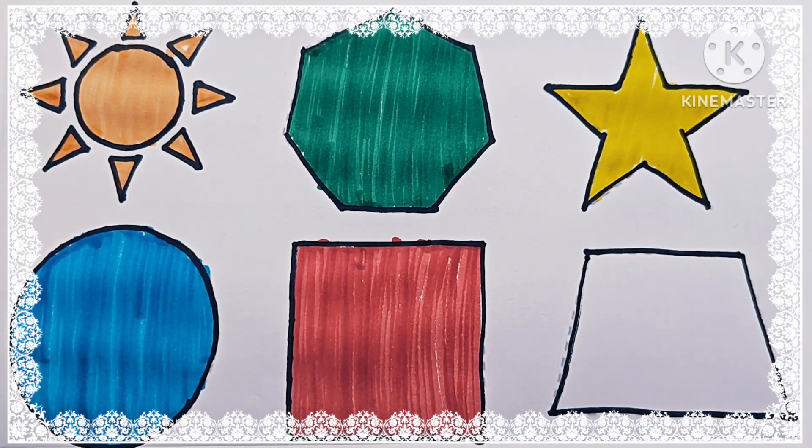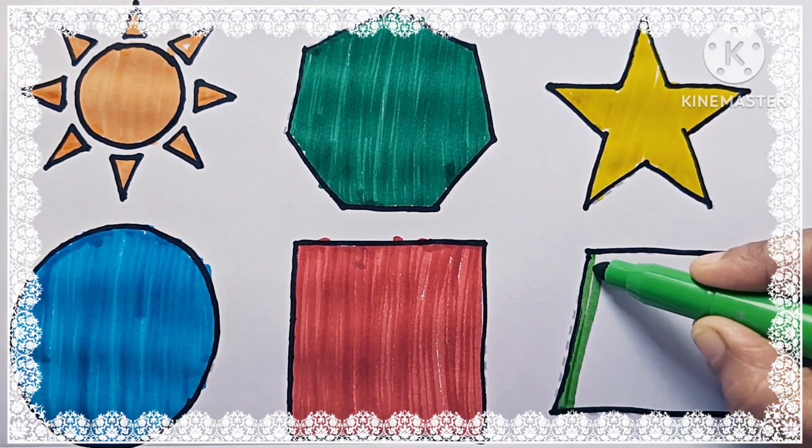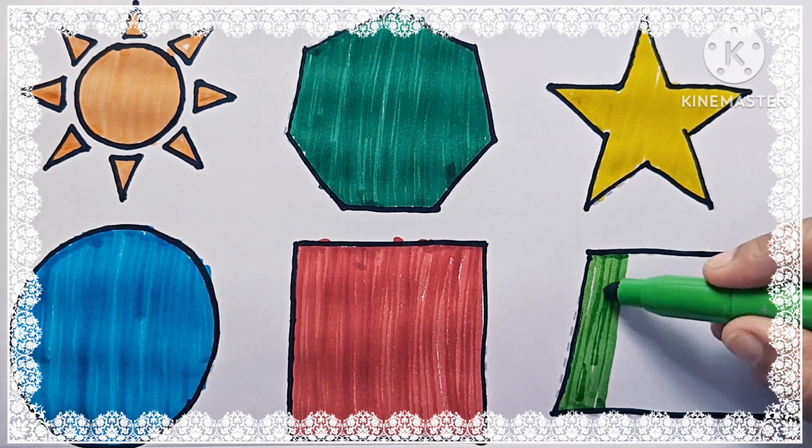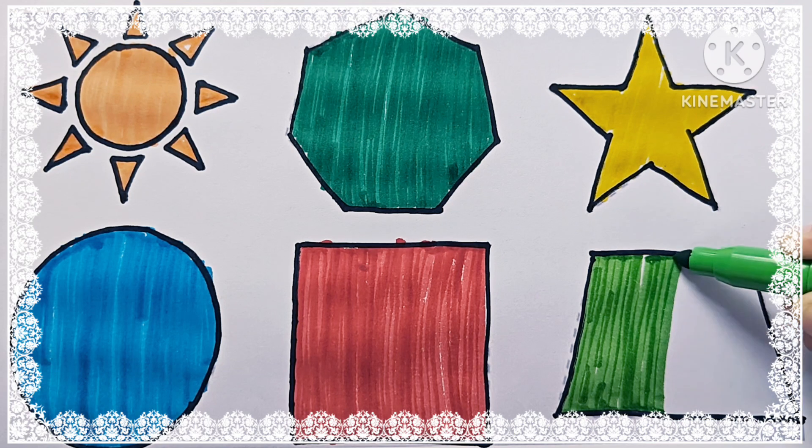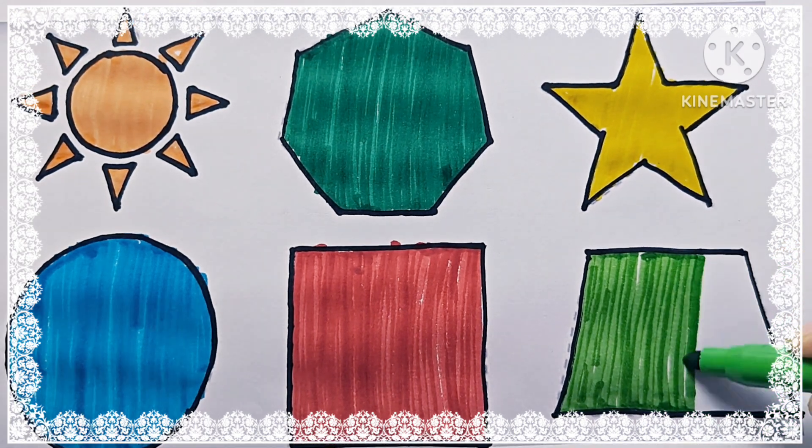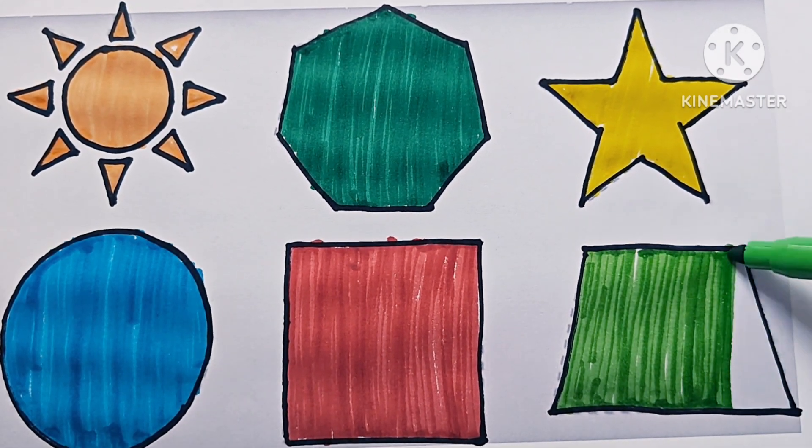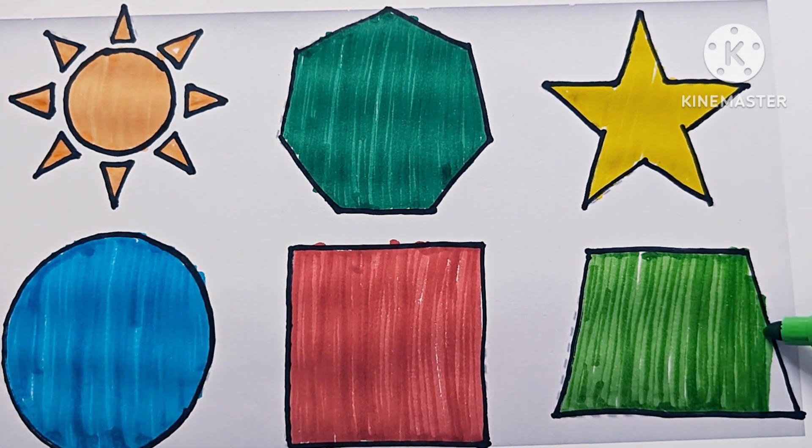Light green color. It is trapezoid. It has 4 sides. It is trapezoid. Color is light green. Thanks for watching this video.